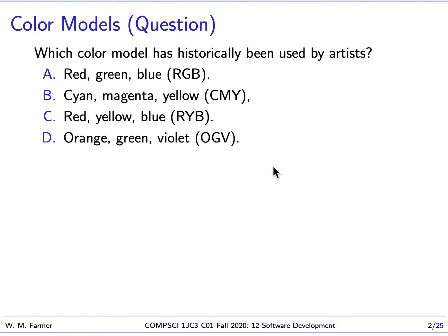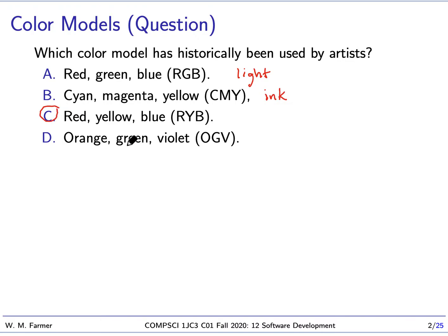Welcome back. Last time we talked, we know that the RGB color model is used when you're producing color with light, and the CMY model — or CMYK with black — is for producing color with ink. Now, traditionally, going back hundreds of years, the model used by artists is the red, yellow, blue model. So that's the answer. One reason this model is common is that the intermediate colors — the colors you get by mixing any two — turn out to be orange, green, and violet, which tend to be more standard colors than cyan, magenta, and yellow.